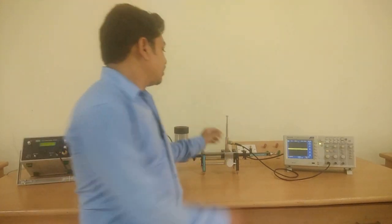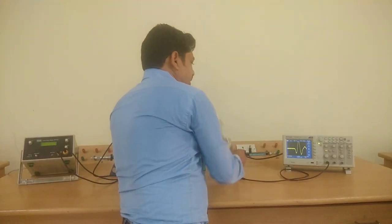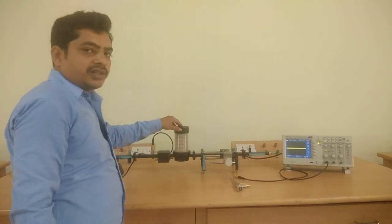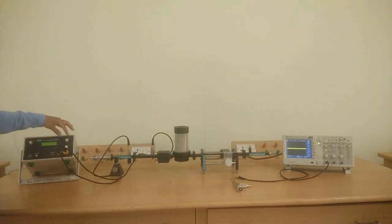After the completion of experiment, we have to remove crystal detector and detune the frequency meter to initial condition. And by mod frequency and pin bias, we are going to reduce to the minimum position and gun bias also to the minimum position and power off the device.